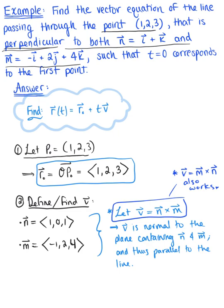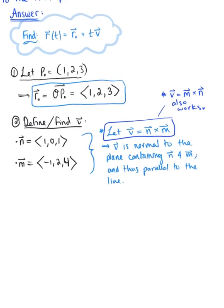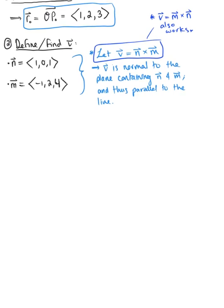So we need to compute our cross product. We have vector v is vector n crossed with vector m, so we are setting up that 3 by 3 determinant. We have i hat j hat k hat, vector n has the components (1, 0, 1), and vector m has the components (-1, 2, 4).